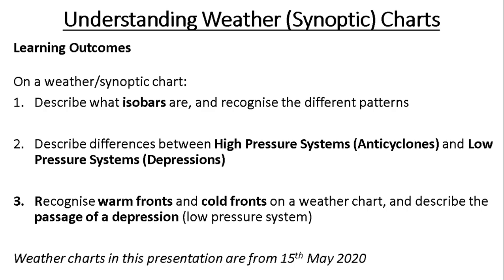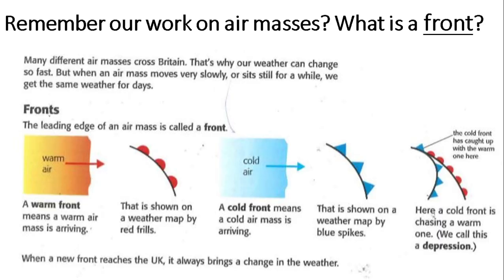Images are used from different weather charts on the 15th of May 2020. A front is the boundary between two different air masses. The symbol with the red semicircles indicates a warm front, showing a warm air mass moving in, for example a tropical maritime air mass. The symbol with the blue triangles is a cold front, representing a cold air mass moving in, for example polar maritime.